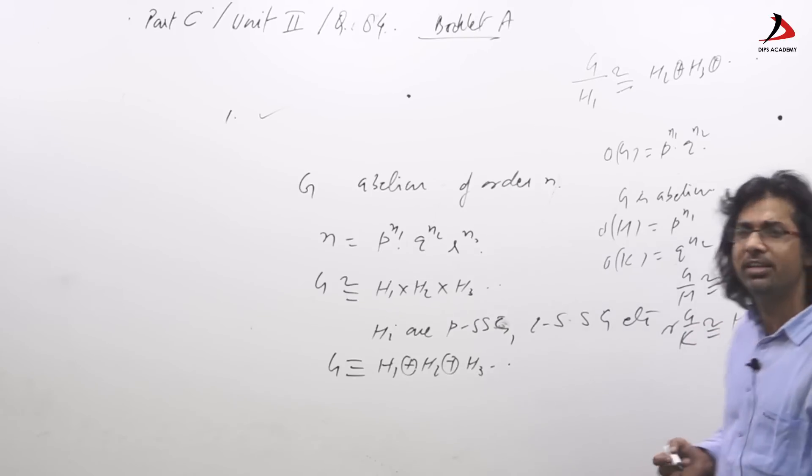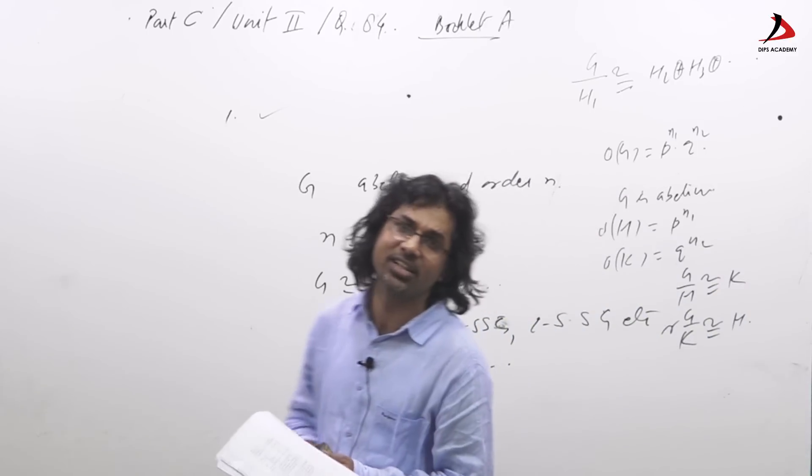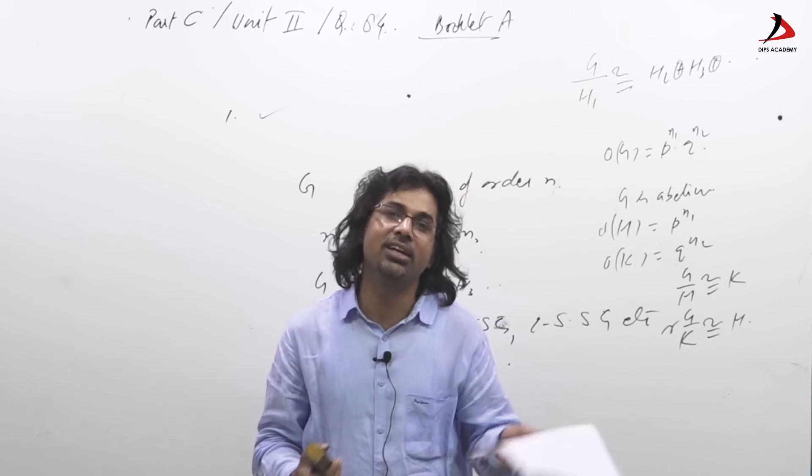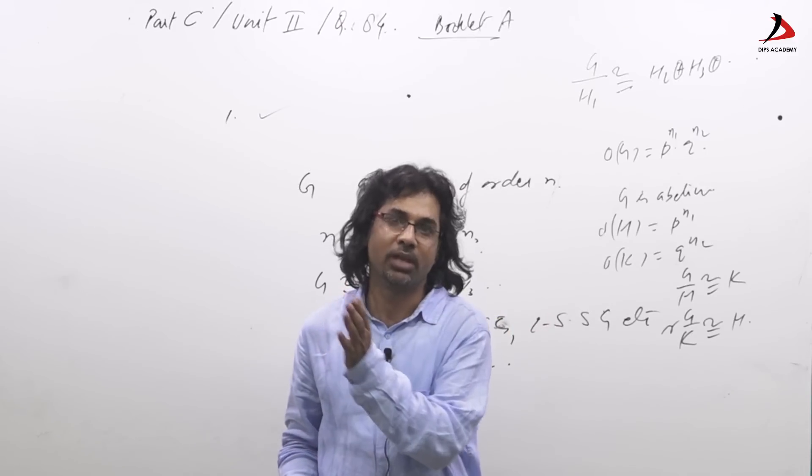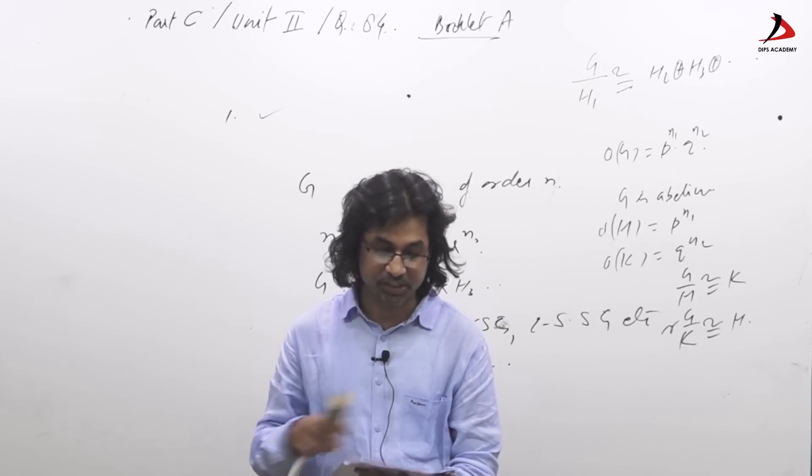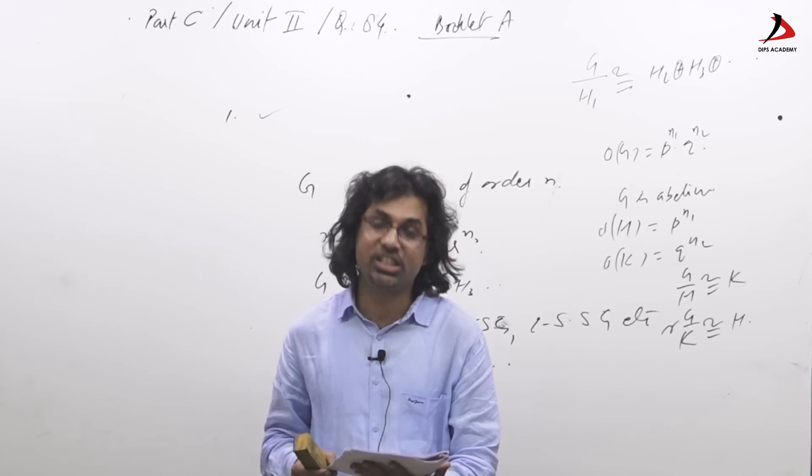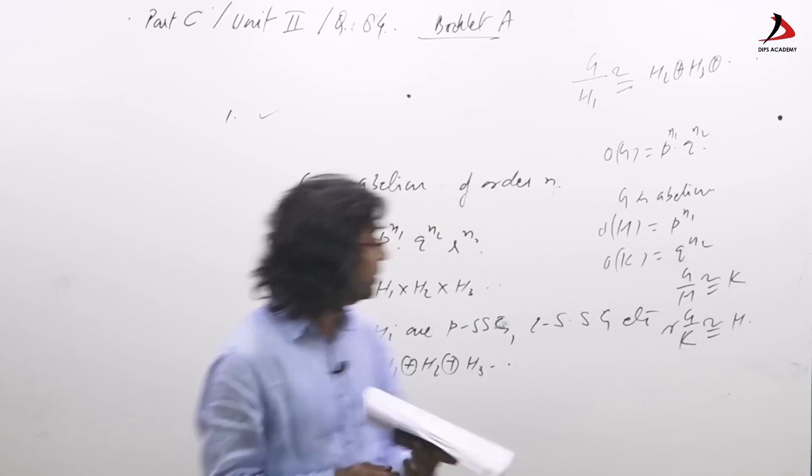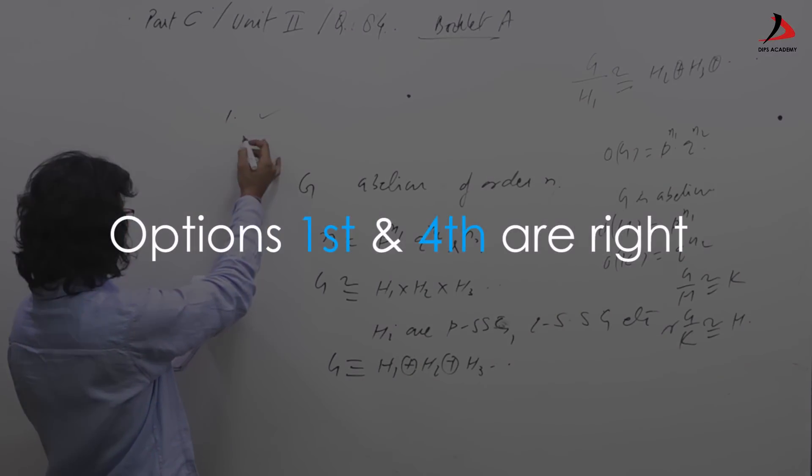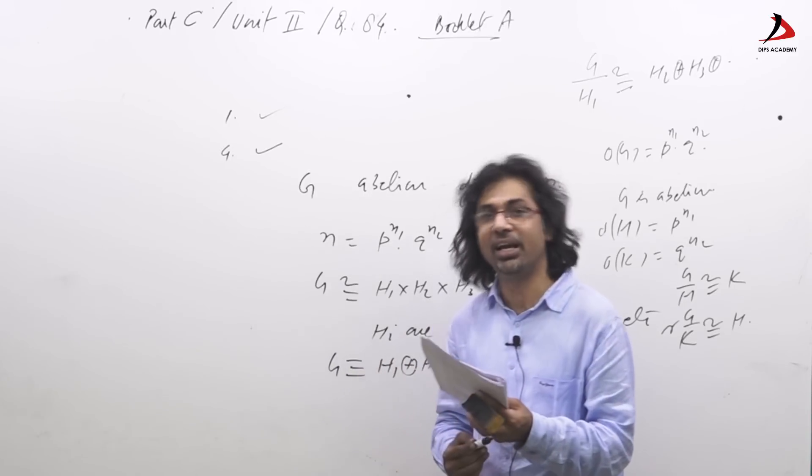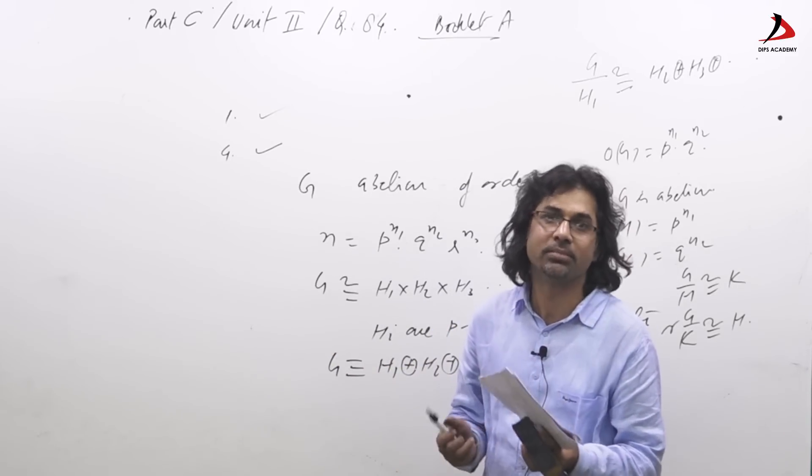In nutshell we can simply take this as a result: every finite abelian group is internal direct product of its Sylow subgroups. Hence the result, existence of such h for which g/n is isomorphic to h is correct. So fourth is also correct. So for this question, question number 84, the options one and four are correct whereas two and three are incorrect. Two and three are eliminated with the help of counter examples. Thank you.